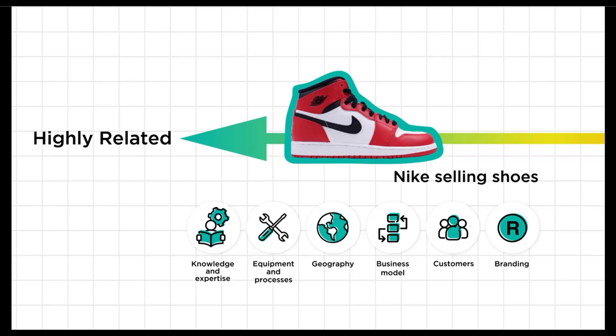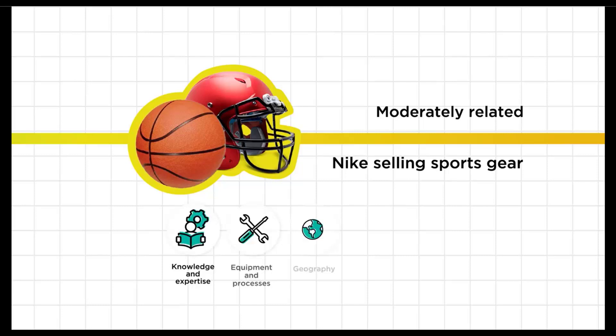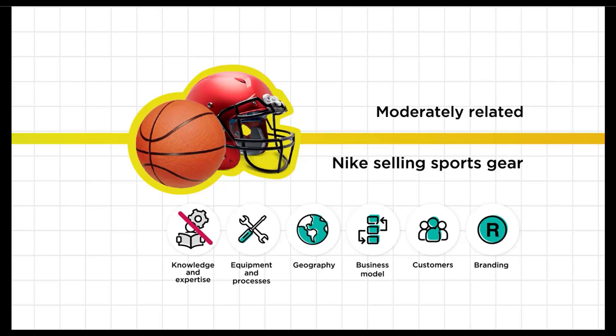When Nike expanded into premium mass market apparel and other sports gear sold through the same retailers it was already using, this used different knowledge and expertise but the same brand. It used different equipment and processes, though probably still some shared logistics, and it was selling into the same customers and geography using the same business model.